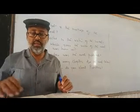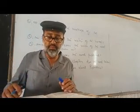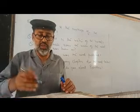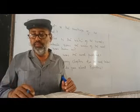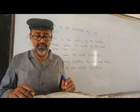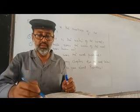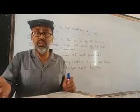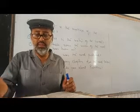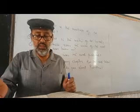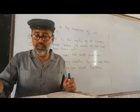Question number seven: Which family rules Ruritania? Question number eight: Where is Zenda? Question number nine: What do you know about the hero of the novel? Question number ten: Who is Robert? Question number eleven: Who is Rose?